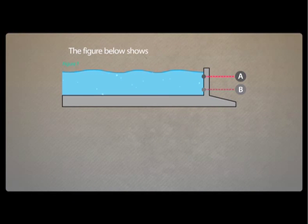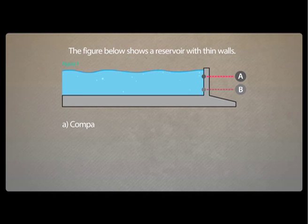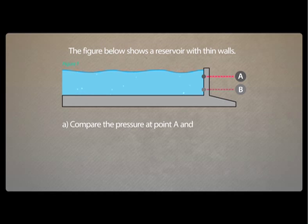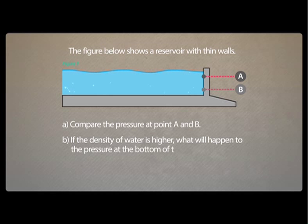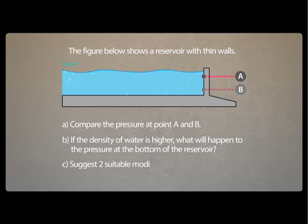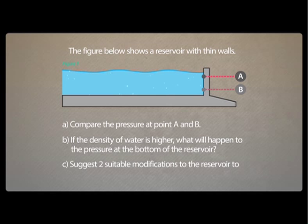Figure 1 shows a reservoir with thin walls. Part A: Compare the pressure at point A and point B. Part B: If the density of water is higher, what will happen to the pressure at the bottom of the reservoir? Part C: Suggest two suitable modifications to the reservoir to improve it. Please explain.